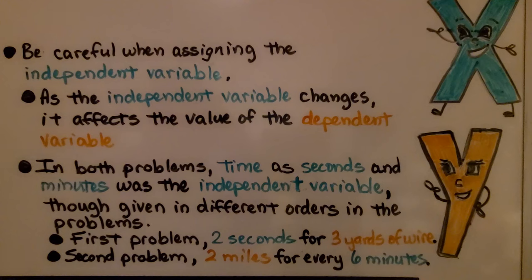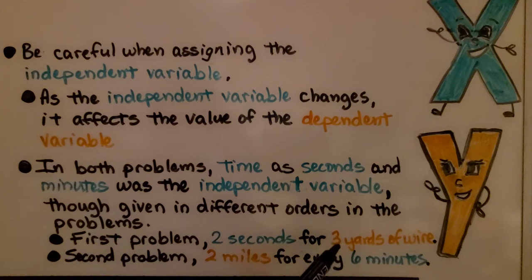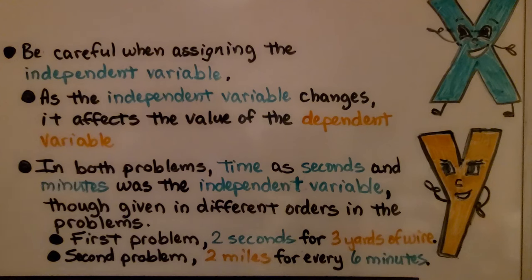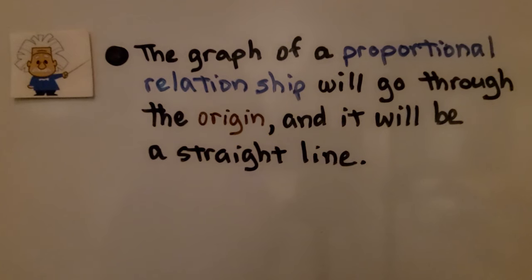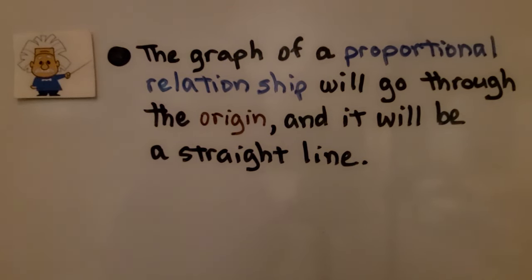Be careful when assigning the independent variable. As the independent variable changes, it affects the value of the dependent variable. In both problems, time in seconds and minutes was the independent variable, though given in different orders. In the first problem, time was given first — two seconds — then the dependent variable, three yards of wire. In the second problem, the dependent variable was given first — two miles — for every six minutes, the independent variable. So be very careful when assigning the independent variable. Remember, the graph of a proportional relationship will go through the origin (0, 0) and it will be a straight line.